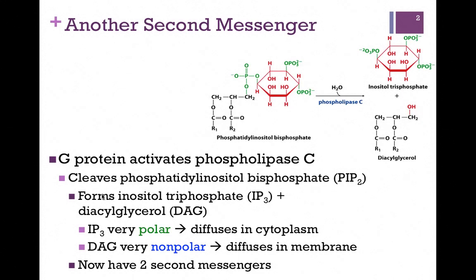Recall, phospholipases are enzymes that digest phospholipids. In this case, it's phosphatidylinositol bisphosphate — the acronym for that is PIP2. Here we have our glycerol backbone and the two fatty acid chains in black, and our phospho head group here in red and green. Phospholipase C is going to hydrolyze the bond connecting that phospho head group to the glycerol backbone.